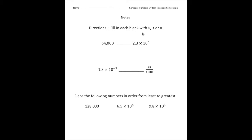It says fill in the blank with greater than, less than, or equal to. So here we're comparing 64,000 and 2.3 times 10 to the fifth power. When comparing these two numbers we want to write them both in either scientific notation or standard form. So what I'm going to do is change this expression into standard form.